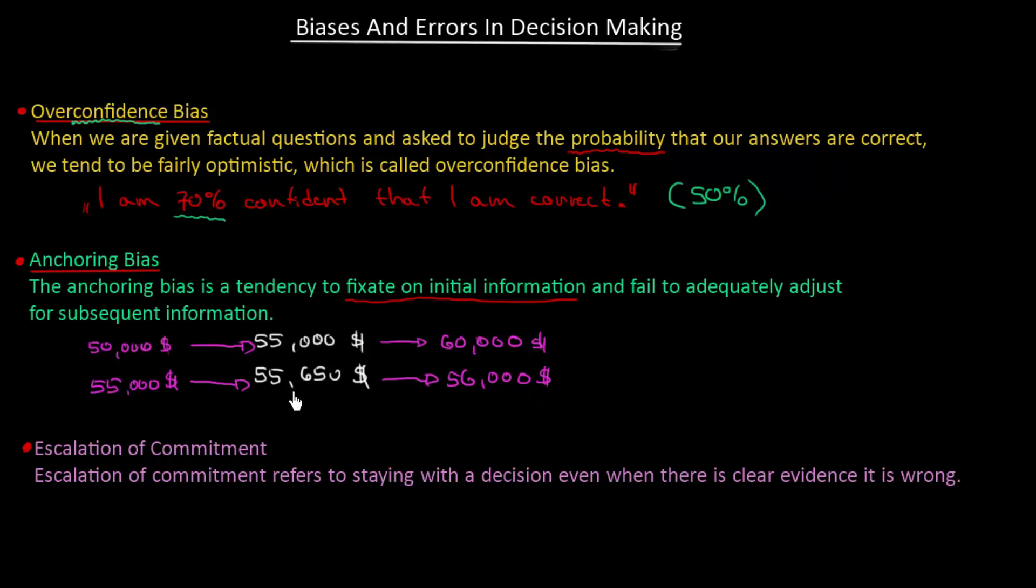You really should be more concrete. This is the anchoring bias, but it's a little bit tricky to explain. We fixate on initial information, which was in this case the answer to how high a salary we imagine. Then if we continue talking about salary, job expectations and so on, the potential employer would fail to adequately adjust to the subsequent information. This happens quite often in the minds of managers.